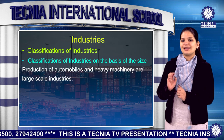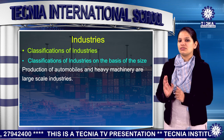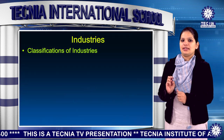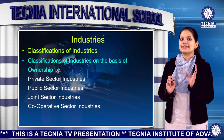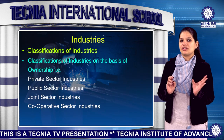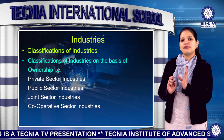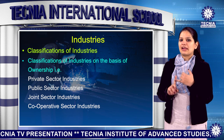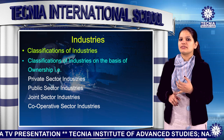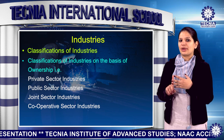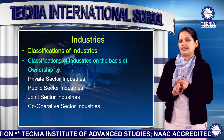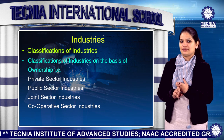Silk weaving and food processing industries are small scale industries. Production of automobiles and heavy machinery are large scale industries. The next classification is on the basis of ownership: private sector industries, public sector industries, joint sector industries and cooperative sector industries.